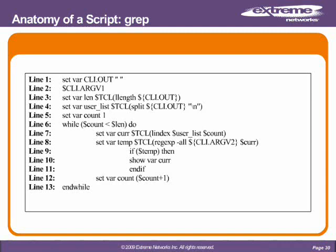As you can see in this line, we're setting var count and we are calling to the count variable. However, we are using an operator to manipulate that variable — we're using the plus operator and adding 1. Then the while continues; we go back up to line 6, while count is less than length, which we've gotten programmatically from the CLI out length examination function in line 3.